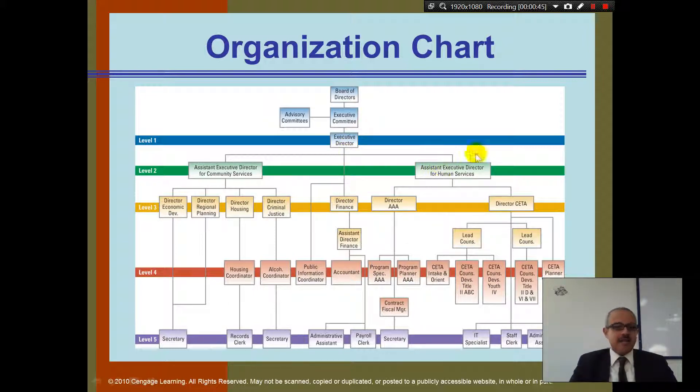This line means that this guy, assistant executive director of human services, reports to this guy. So this guy has the authority to command this person here, and then this person will command those two directors.